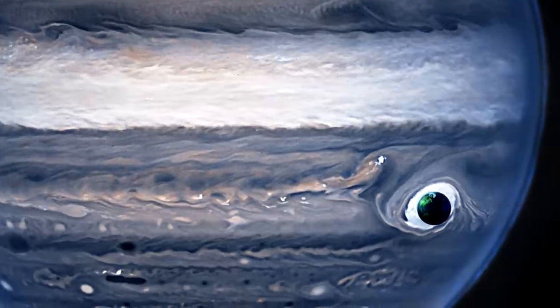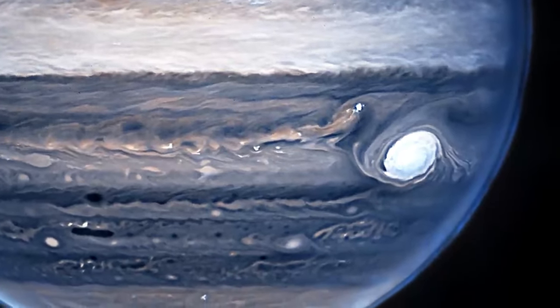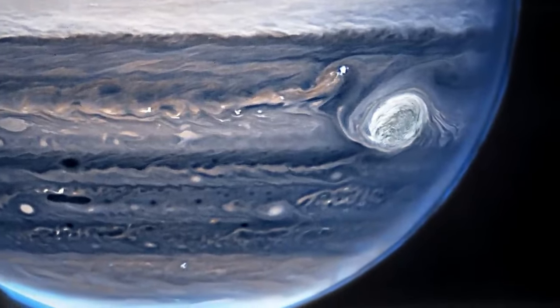The great red spot, a famous storm so big it could swallow the entire earth, appears white in the image because it reflects a lot of sunlight.